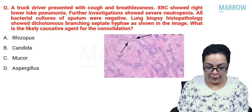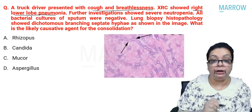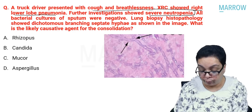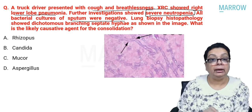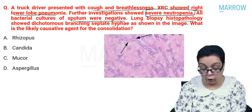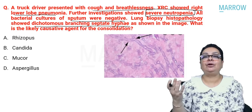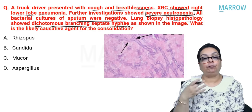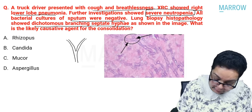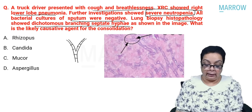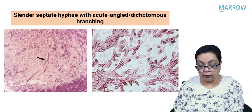A truck driver with cough, breathlessness, right lower lobe pneumonia, and severe neutropenia had negative bacterial sputum cultures. Lung biopsy histopathology showed dichotomous branching septate hyphae — the moment we read 'dichotomous,' we think Aspergillus. Aspergillus forms slender septate hyphae with acute-angled (45-degree) dichotomous branching. The likely agent is Aspergillus.